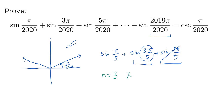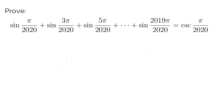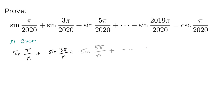If we want this identity to work when n is odd, we'd probably need more modifications. So for this video, we're just going to focus on the case when n is even. We will prove that sine of pi over n plus sine of 3 pi over n, all the way to sine of (n minus 1) pi over n, equals cosecant of pi over n.